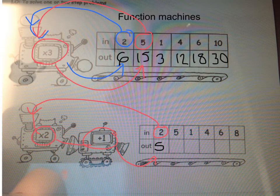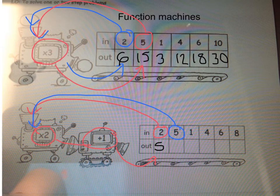The next one then, we start with 5. 5 goes into the machine, gets multiplied by 2, which gives us 10, which we add 1 to, which gives us 11.